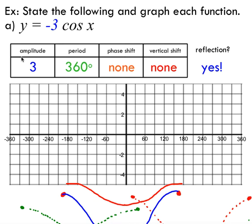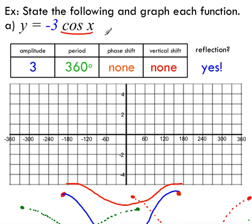In this first example, there are really only two transformations: a reflection over the x-axis and a stretch by a factor of three — an amplitude of three. The k value is one, so the period is 360 divided by one, which is 360 degrees. I'm going to start by just graphing cos x. Cos starts at one when x equals zero, and goes through one complete cycle in 360 degrees.